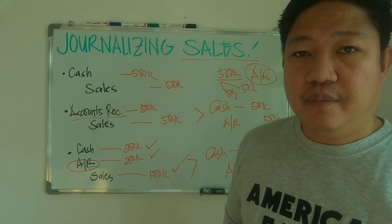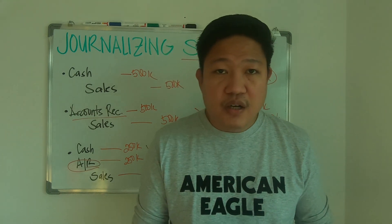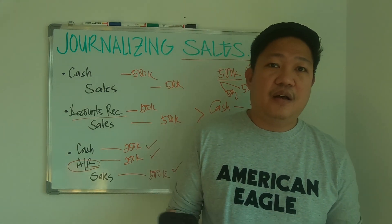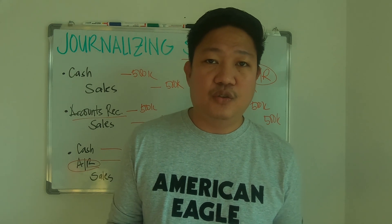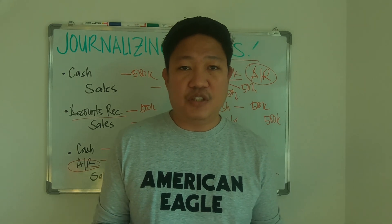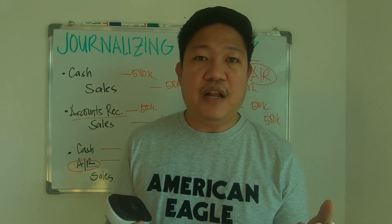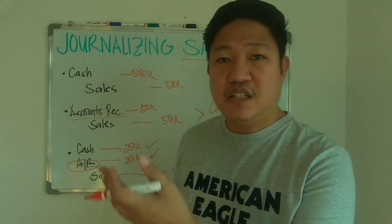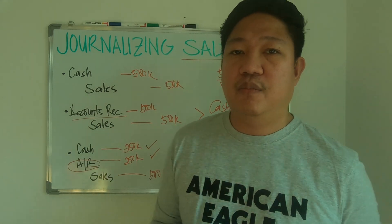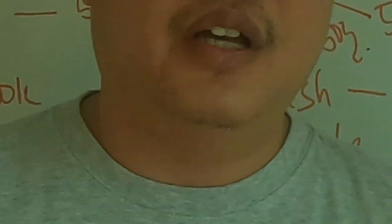Both cash and accounts receivable will be recorded as current assets under the balance sheet, and sales of course goes to the income statement. There are also cases where transactions are subject to tax, like value-added tax. We will discuss how to record transactions with VAT in the next video.